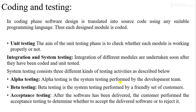After successful coding and unit testing, we perform integration and system testing. Integration means combining all the available modules to make a whole working system. After integration, we perform system testing, which is of three types: alpha testing, beta testing, and acceptance testing. Alpha testing is performed by the development team. Beta testing is performed by a friendly set of customers. Acceptance testing is performed by the actual customer, who determines whether to accept or reject the delivered software.